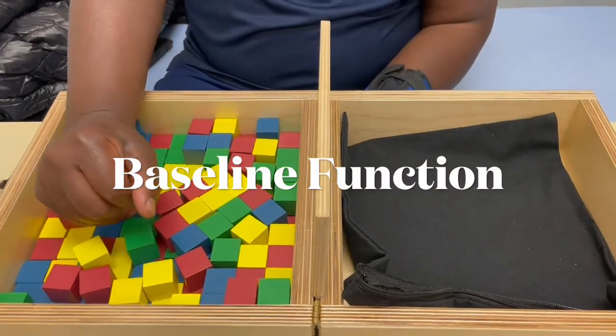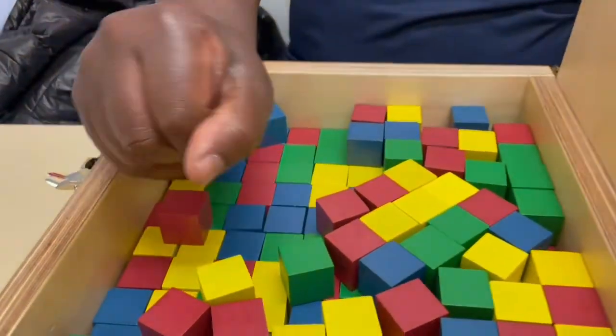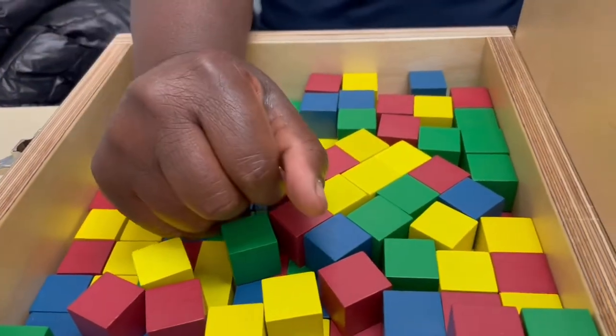When we ask him to do a functional task he's actually a little bit better. Here he is able to use his hand to grab some blocks, but you can see that hand is very tight.